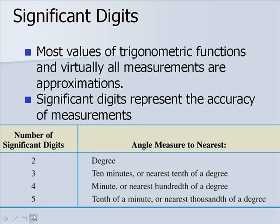We have the following breakdown. An angle of measure to the nearest degree would have two significant digits. An angle of measure to the nearest ten minutes would have three significant digits, and so on. For example, if we have 52 degrees 30 minutes, that would be to the nearest ten minutes, and this has three significant digits.